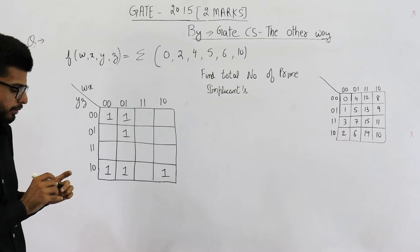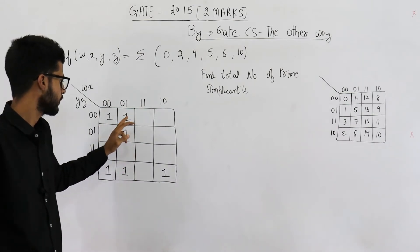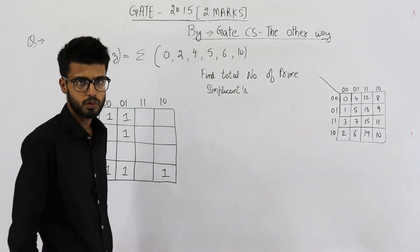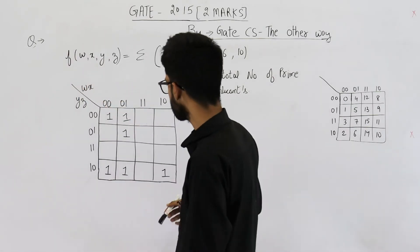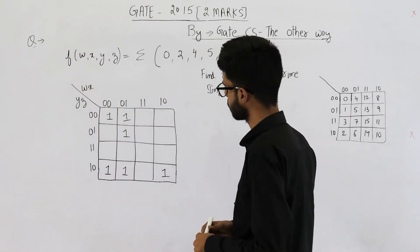So I filled the K-map, that means all these inputs, all these cells will have an output of 1. Now let's try to find out the prime implicants.